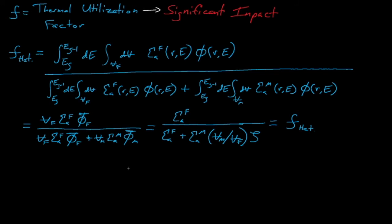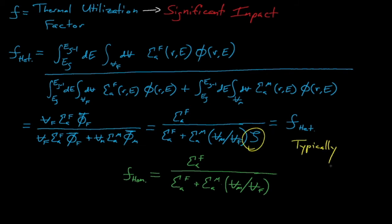then we arrive at this equation, which now contains a cell disadvantage factor. Now, if our cell is homogenized, then the fuel and moderator fluxes are equal, which gives us this expression for the homogenized thermal utilization factor. Because our cell disadvantage factor is almost always greater than 1, this means that our naive homogenized thermal utilization factor is actually greater than our actual, real, heterogeneous thermal utilization factor.